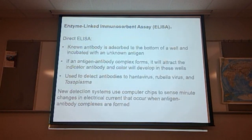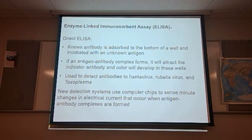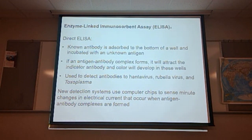A direct ELISA uses a known antibody adsorbed to the bottom of a well and incubated with an unknown antigen. If the antigen-antibody complex forms, it will attract the indicator antibody and color will develop in the wells. This type of test is used to detect things like rotavirus, rubella virus, and toxoplasma.